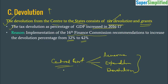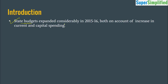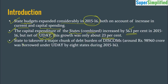Now, Section 2 — state government finances. The Economic Survey says state budgets expanded considerably in 2015-16, both on account of increase in current and capital spending. The capital expenditure of states combined increased by 56% — very huge — in 2015-16. But net of UDAY, if we remove UDAY expenditure, the growth was only 23%. UDAY contributed a lot to the fiscal burden: states borrowed almost ₹98,960 crore (nearly 1 lakh crore) under UDAY across eight states during 2015-16.